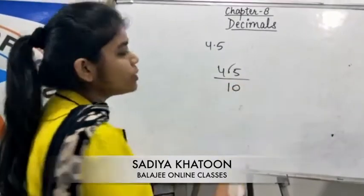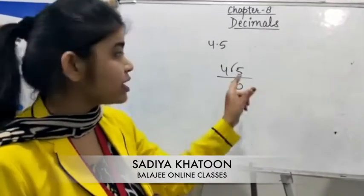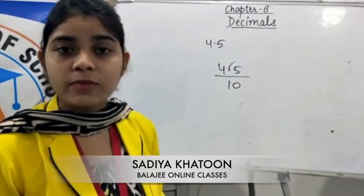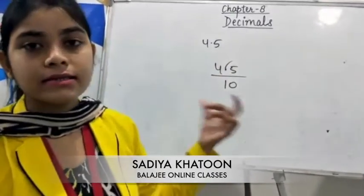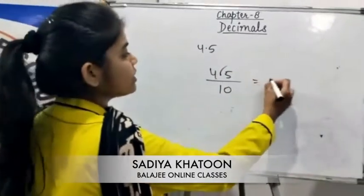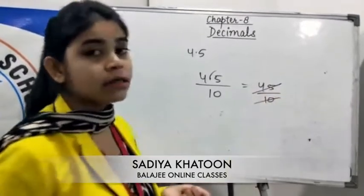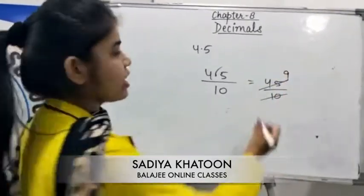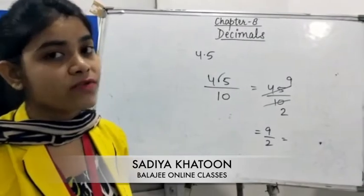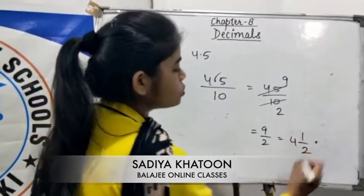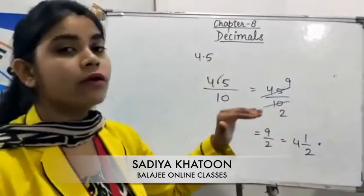So you will divide by 10. If there are 2 digits after the decimal, you divide by 100; if there are 3 digits, you divide by 1000. Here we remove the decimal and divide by 10, giving us 45 upon 10. Simplify by 5: you get 9 upon 2. This is an improper fraction, and you can convert it to a mixed fraction: 4 whole 1 upon 2. This is the final answer.